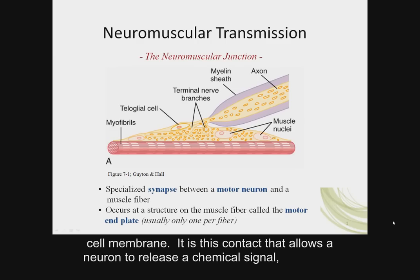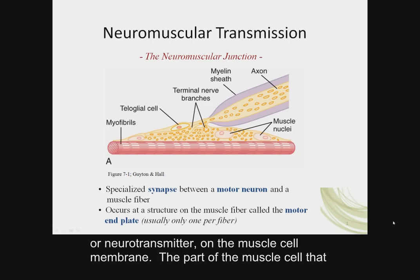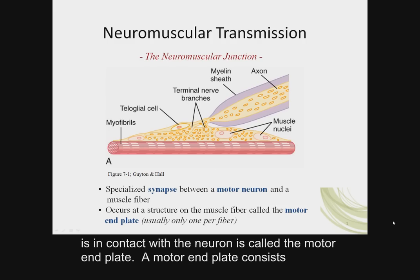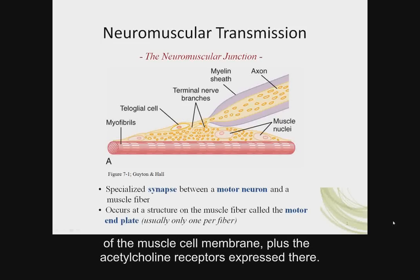It is this contact that allows a neuron to release a chemical signal, or neurotransmitter, on the muscle cell membrane. The part of the muscle cell that is in contact with the neuron is called the motor end plate, which consists of the muscle cell membrane plus the acetylcholine receptors expressed there.